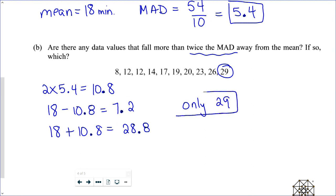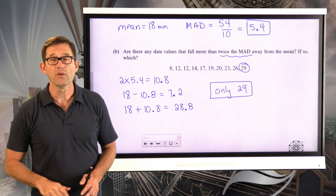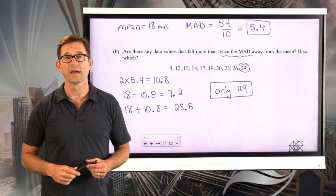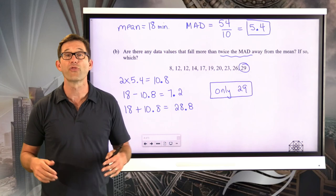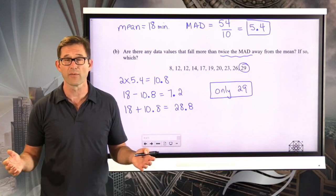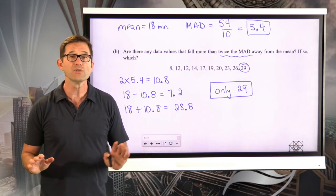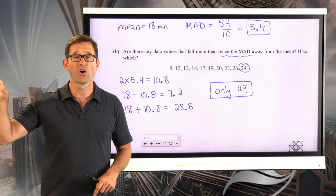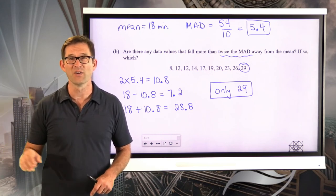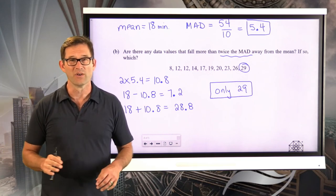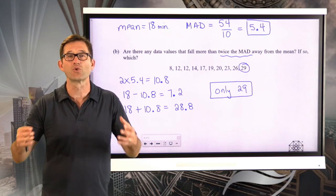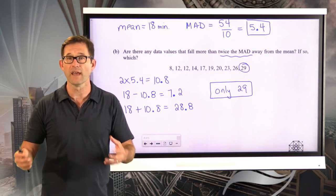Only 29 is that far away. You'll find very, very few values in data sets that are more than three times the MAD away from the mean — those would be very unusual, like your seven-foot-tall basketball players, your very extreme values in a data set.